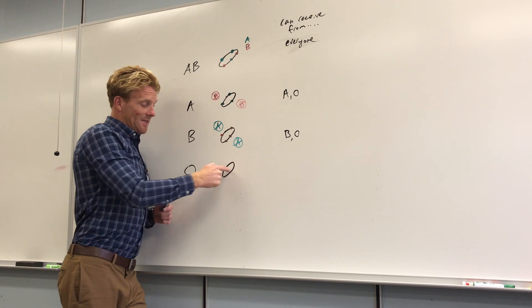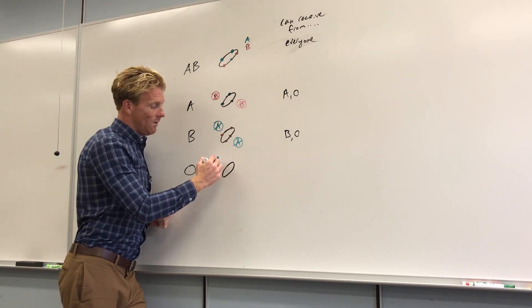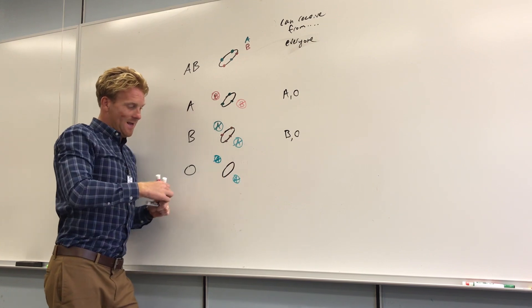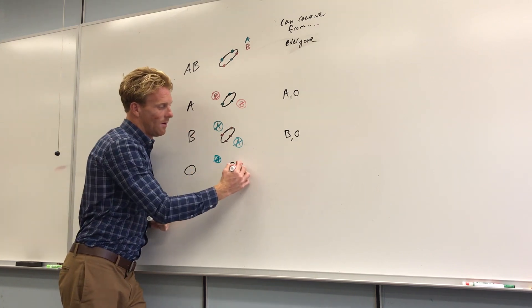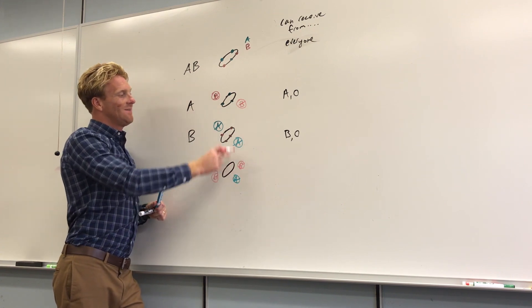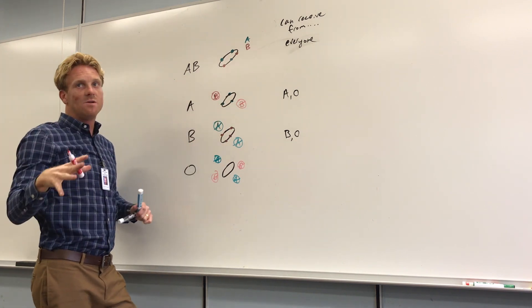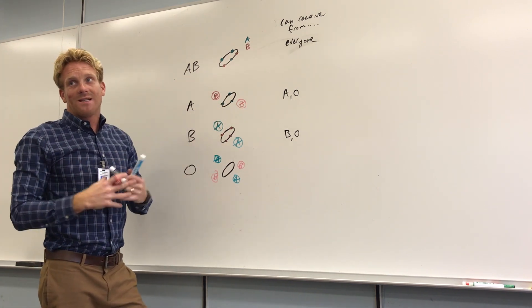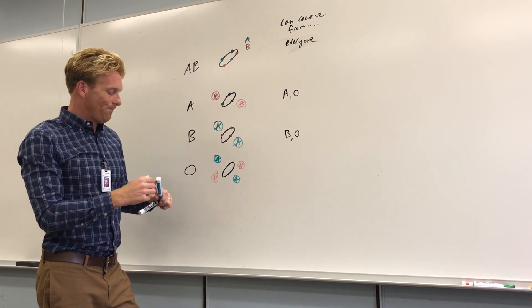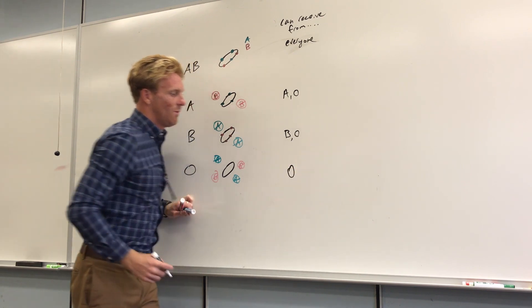Someone with O blood lacks these markers entirely, but they contain both types of antibodies — anti-A and anti-B. The immune system will react to both A blood and B blood. That means if someone with O blood receives any of these other types of blood cells, it will activate the immune system, causing those blood cells to clump together in a process called agglutination — which is very bad. So someone with O blood can only receive blood from another person with O.